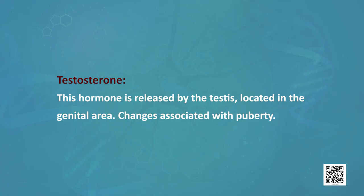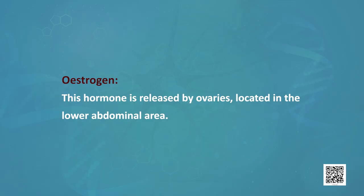Now we will discuss sex hormones. Both males and females have different types of sex hormones. Males have testosterone, which is released by the testes located in the genital area. This hormone is responsible for changes associated with puberty. Females have estrogen, which is released by the ovaries located in the lower abdominal area. The endocrine system along with the nervous system helps in control and coordination in animals.